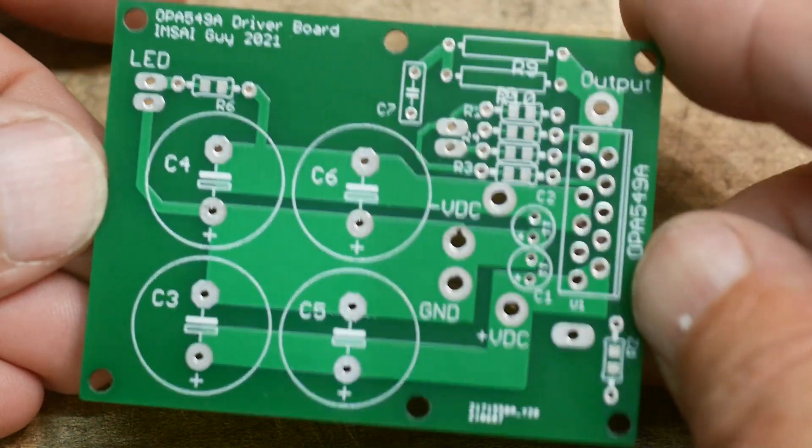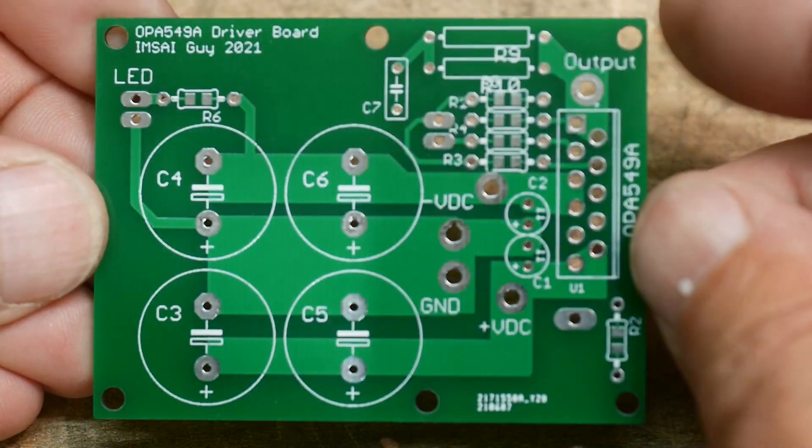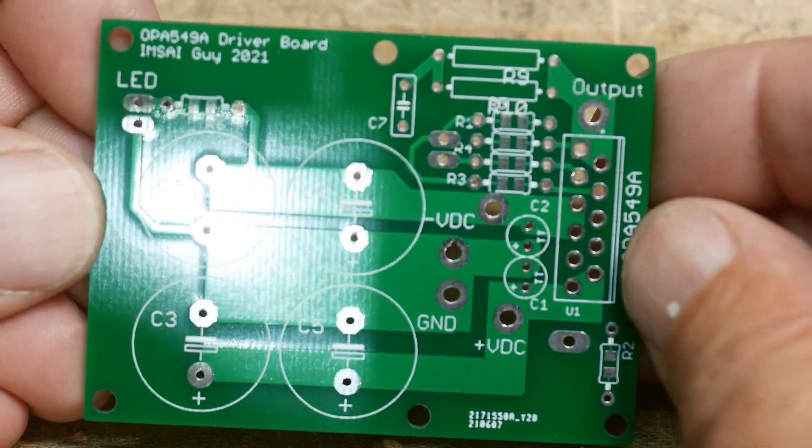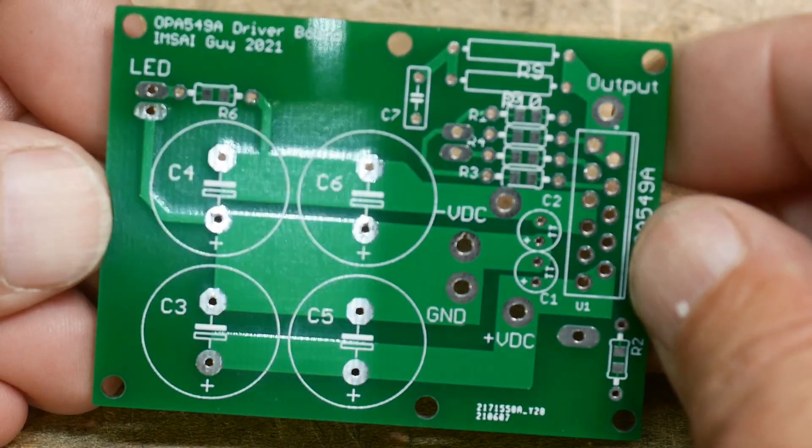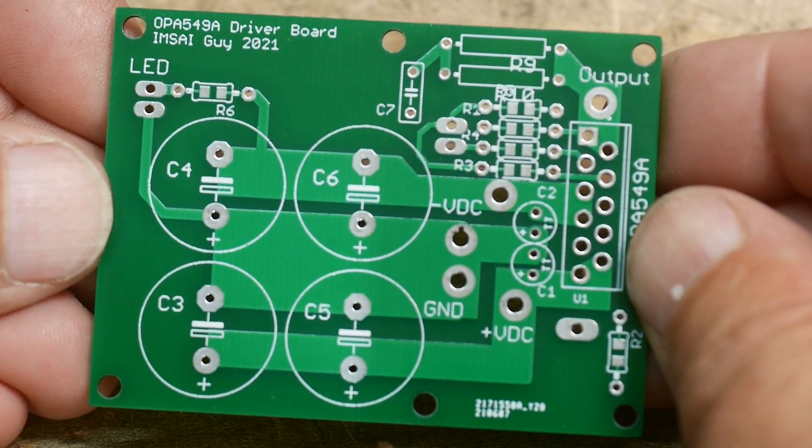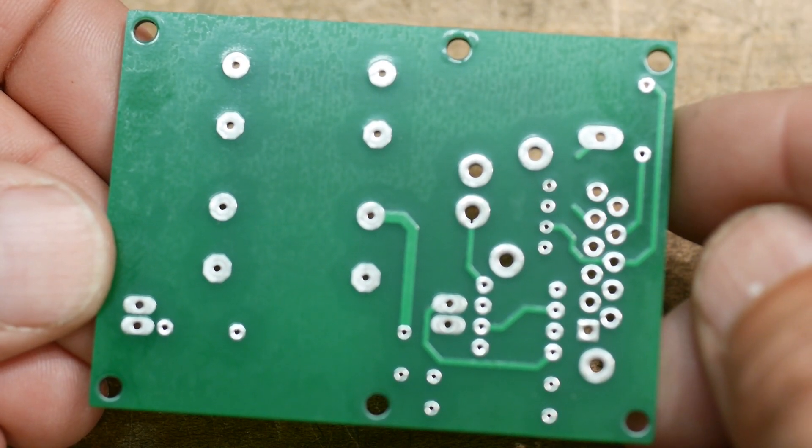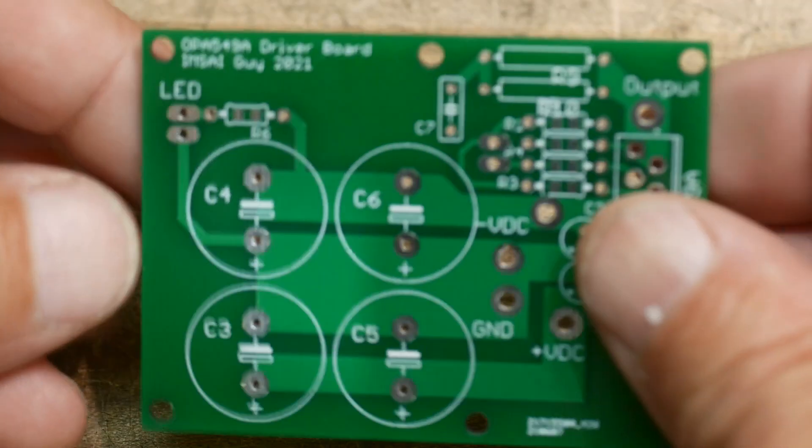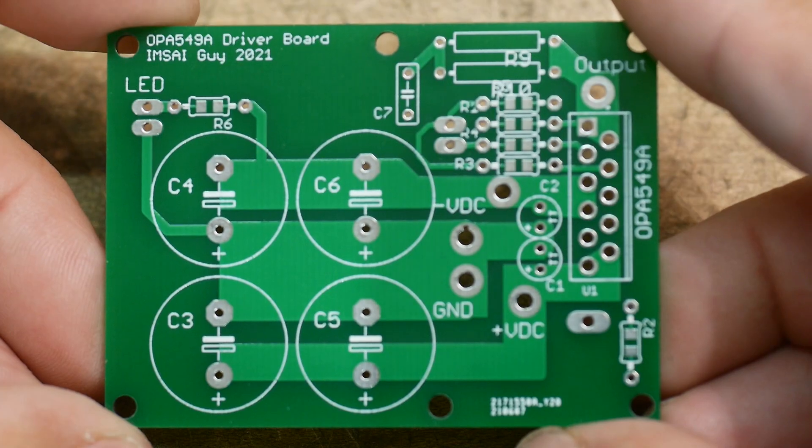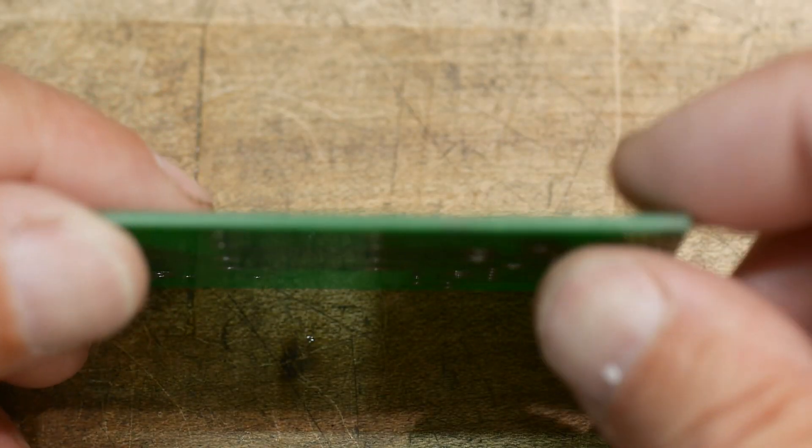People might ask, I get my boards from JLC PCB, not a sponsor there. Yeah, turned out good, it's a 1.6 millimeter board.